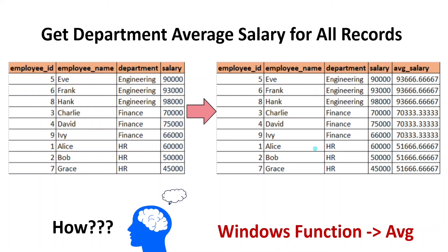In order to solve this problem statement, first what we have to do is add the average department salary for all the employees along with their salary. Then it is going to be super easy. We have to visualize in this format — this is my input data set, the same previous data set. I have just sorted based on the department so that it is easier to visualize.